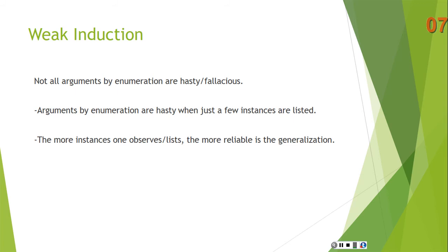Suppose you know there are only 100 swans in existence and you've observed 95 of them — all white. Therefore, the other five will be white as well. This is a strong argument. You could be wrong, of course, but that's the nature of inductive arguments. But to know there are 100 swans, observe only five of them that are white, and conclude the other 95 will also be white — that's hasty.